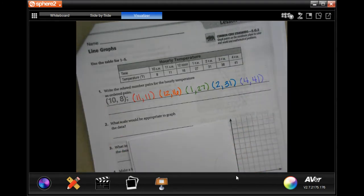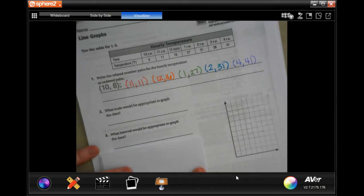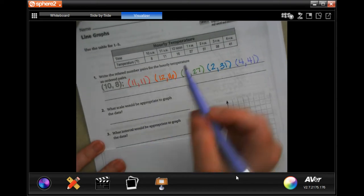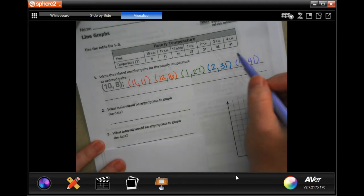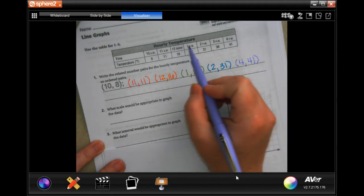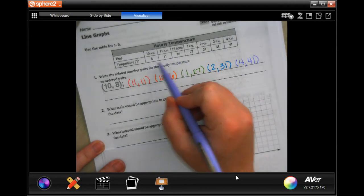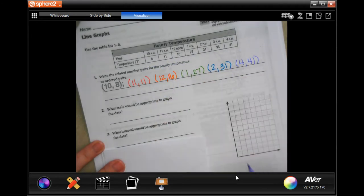What scale would be appropriate to graph the data? Well, you've got time up here, so that's going to be set no matter what, and those are pretty much on the marks. But in order for us to graph the second one, we would have a scale.